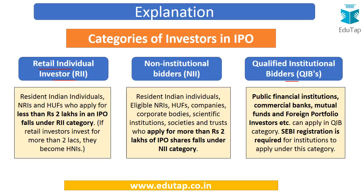Retail individual investors are resident Indian individuals or HUFs applying for less than rupees 2 lakh in an IPO. If you invest less than rupees 2 lakh in an IPO, you fall in this category. If retail investors invest more than 2 lakhs, they become high net worth individuals and fall under non-institutional bidders. Non-institutional bidders are those applying for more than rupees 2 lakh of IPO shares — they can be resident individuals, NRIs, HUFs, companies, institutions, societies, or trusts.